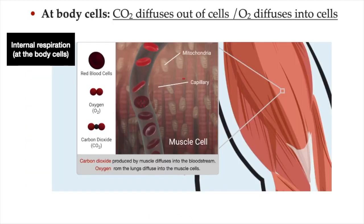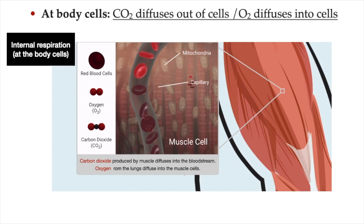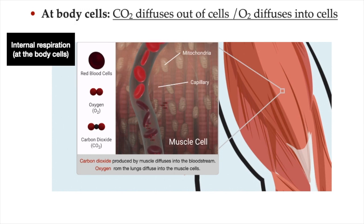At the body tissues, the opposite happens. The cells of our body tissues, especially our muscle tissue, need energy. And in the process of producing the energy they need, they produce carbon dioxide gas and use up oxygen gas. So they have a higher concentration of carbon dioxide gas than the blood that flows through the tissues, and a lower concentration of oxygen. Since gas diffuses from an area of high concentration to an area of lower concentration, carbon dioxide moves into the bloodstream and oxygen into the muscle cells.